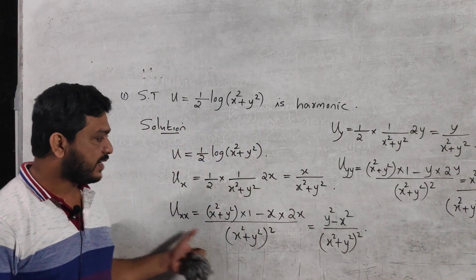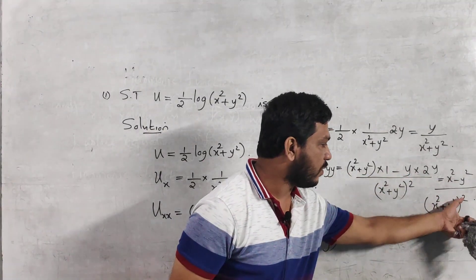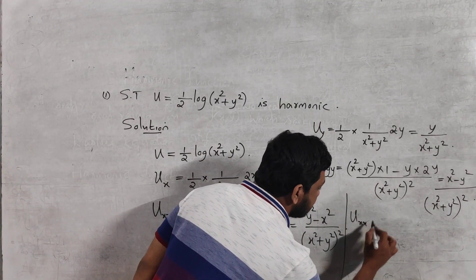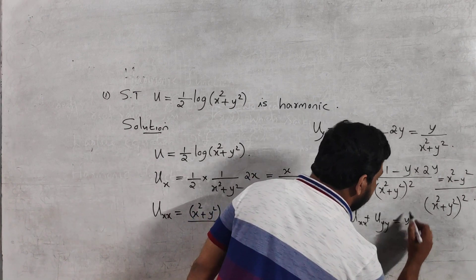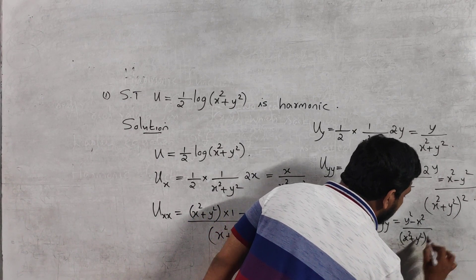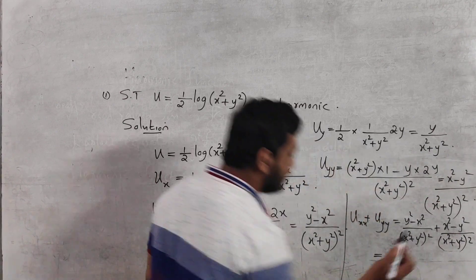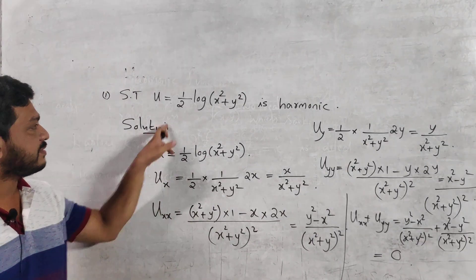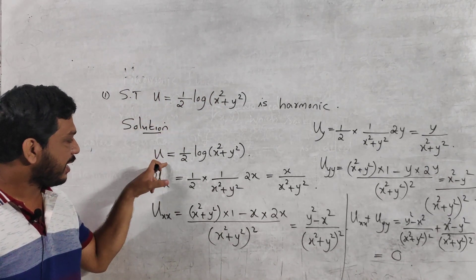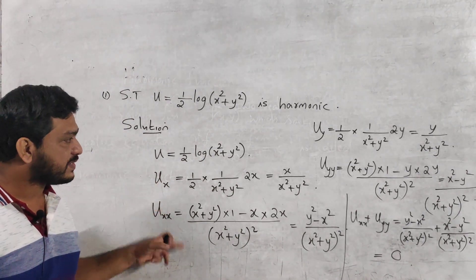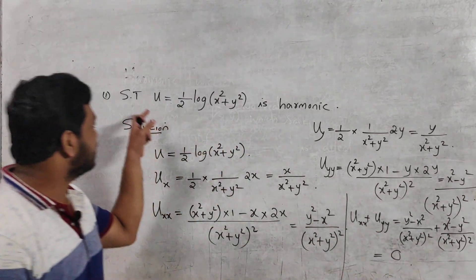So we have uxx = (y² − x²)/(x²+y²)² and uyy = (x² − y²)/(x²+y²)². Hence uxx + uyy = (y²−x²)/(x²+y²)² + (x²−y²)/(x²+y²)² = 0, since all terms cancel. Therefore u is harmonic. The requirement is: compute the first and second order partial derivatives and verify their sum equals zero.